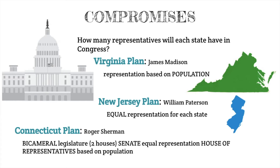Smaller states like New Jersey, with a smaller population, wanted equal representation in this new Congress, with each state having the same power as every other state — similar to what was done under the Articles of Confederation. The debate went on until finally Roger Sherman from Connecticut put forth what's called the Connecticut Plan, a compromise between the two ideas. This is where we get our bicameral legislature, incorporating both plans: one house with equal representation satisfying supporters of the New Jersey Plan, and one house based on population satisfying supporters of the Virginia Plan. Now we have a two-house Congress with equal representation in the U.S. Senate and population-based representation in the U.S. House of Representatives.